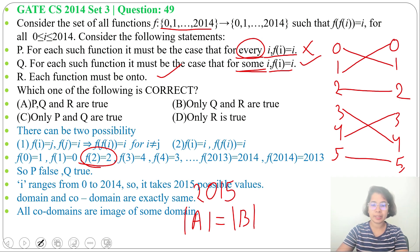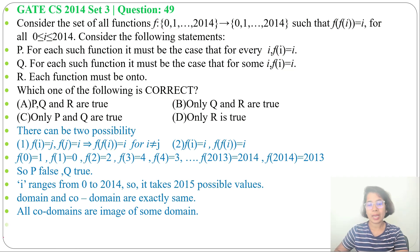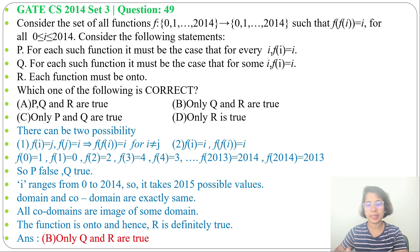Now check in which option it's present. It's present in option B. Only Q and R are true. So the answer will be option B.